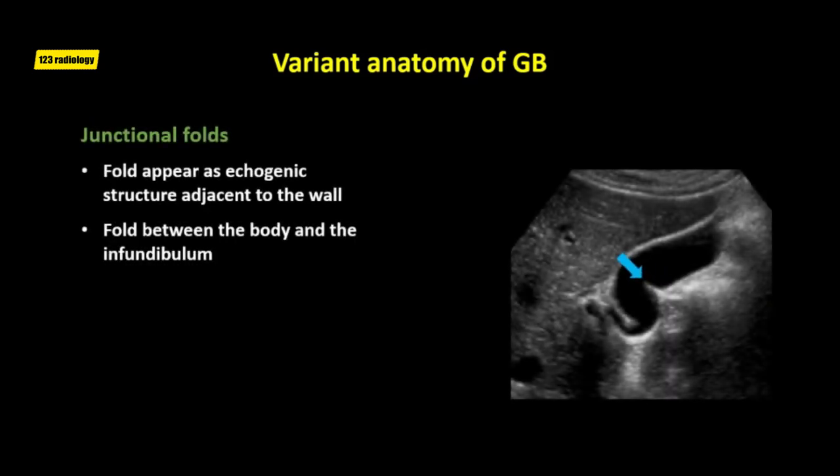Often many folds can be seen in the gallbladder neck. Folds are seen as echogenic structures adjacent to the gallbladder wall. The junctional fold is a fold between the body and the infundibulum of the gallbladder, and is a common anatomic variant seen on sonography. There are frequently one or more junctional folds in the gallbladder neck, and occasionally folds are seen throughout the gallbladder.